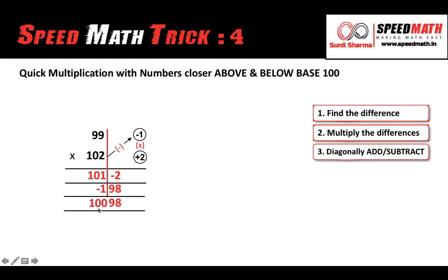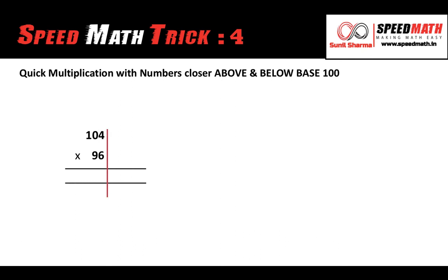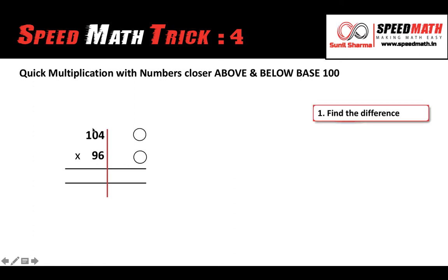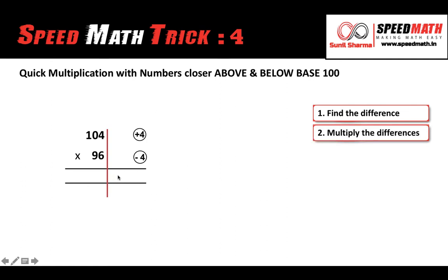So there you have your answer: 10098. Let me take one more example very quickly. 104 and 96 are very close to 100, so 100 becomes the base number. 104 is more than the base and 96 is less than the base. Let's find the differences: 104 is plus 4 more than the base, and 96 is minus 4 less than the base. Multiplying these: 4 into 4 gives you 16, and plus into minus gives you minus, so we have minus 16 on the right-hand side.